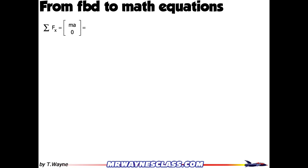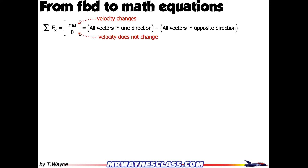When you're looking at the problem, you've got to look at what you have. If the velocity changes, it's equal to ma. If the velocity does not change — like maybe it says it's moving at a constant velocity, or it's at rest — then it would be equal to zero. The final step: all the vectors in one direction equal all the vectors in the opposite direction. That is how you make the math equation.